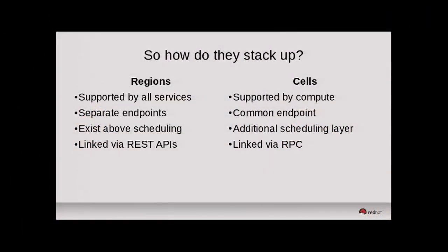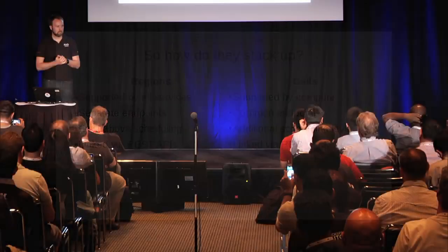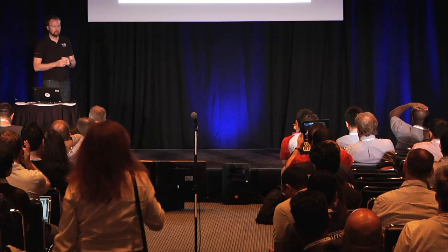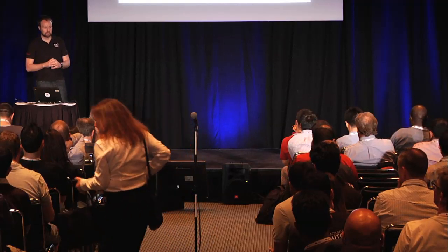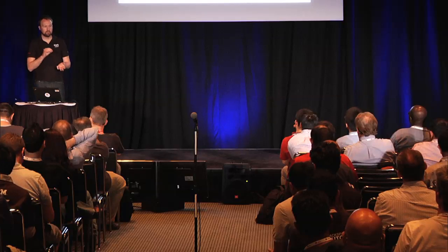Comparing the key points: regions are supported by all services because it's effectively a separate deployment connected by Keystone and Horizon. Cells are only directly supported by compute. Regions have separate endpoints, which requires users to specify them. Cells provide a common endpoint. Regions exist above scheduling; cells insert an additional scheduling layer. An important consideration for upgrades is that regions are only linked by REST APIs, while cells are linked via RPC through the message queue — more vulnerable to version changes, and cells hasn't been a particular focus in upgrade stabilization efforts.